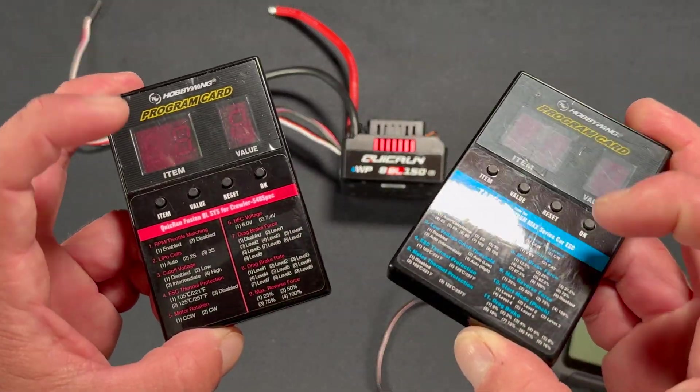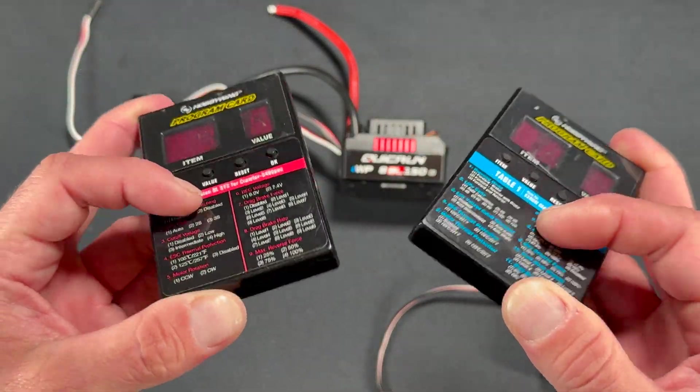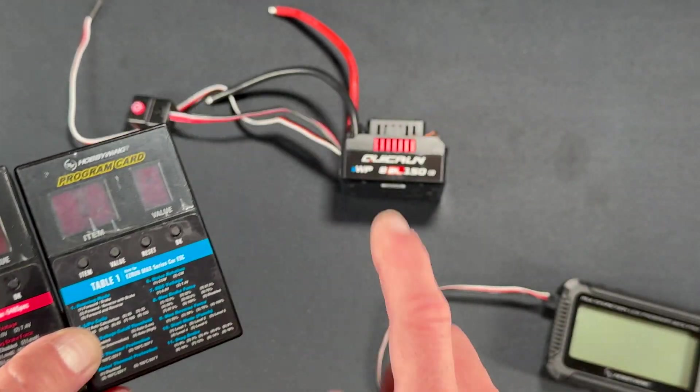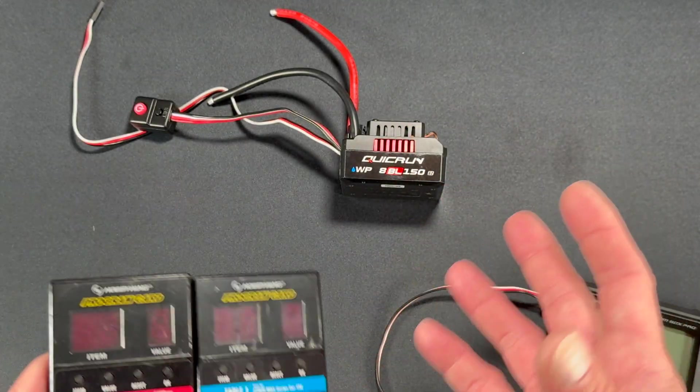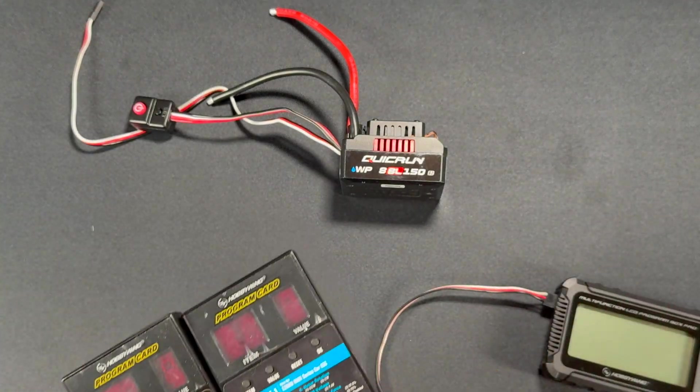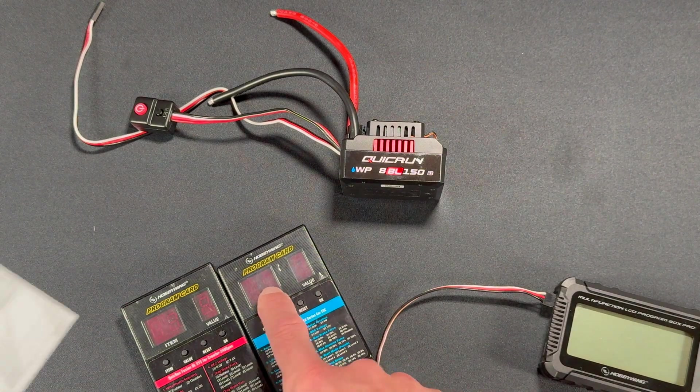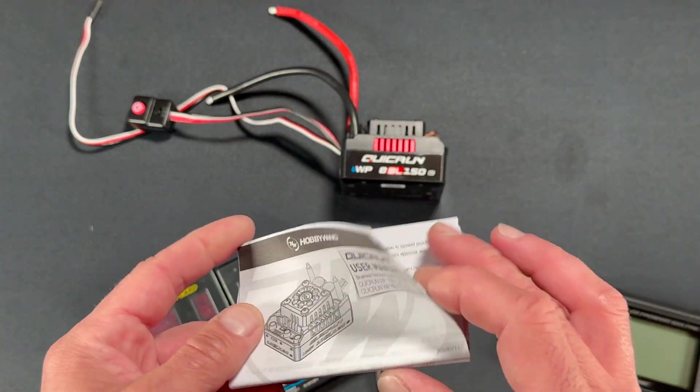It does not support the Bluetooth connectivity that this does, but it will work as a standalone programmer. If you happen to have one of these boxes that has a sticker on it already and you need to know what settings the speed control has, you can't always trust these labels.